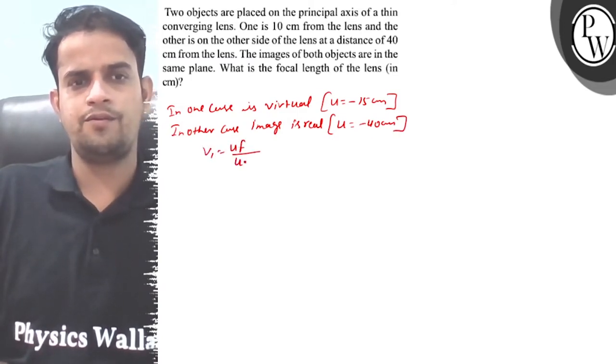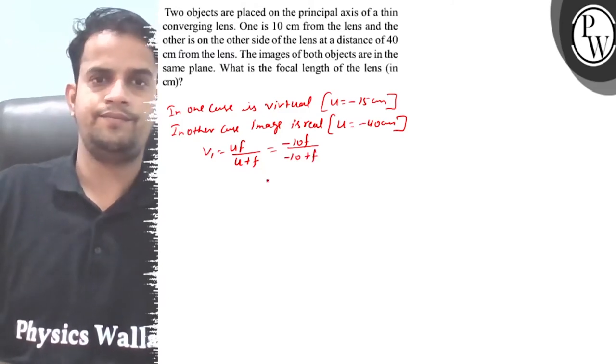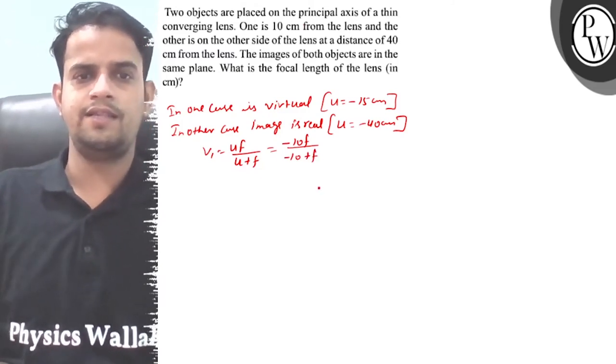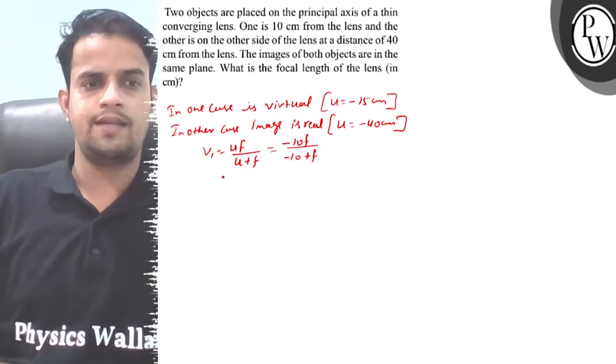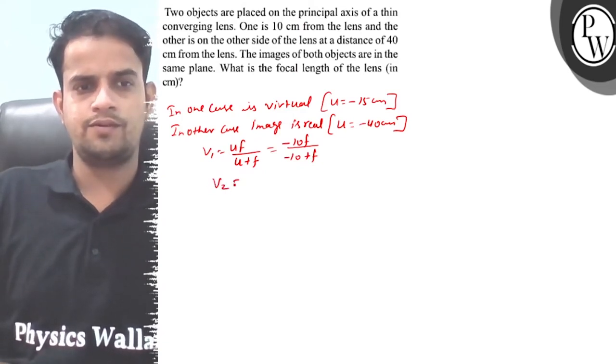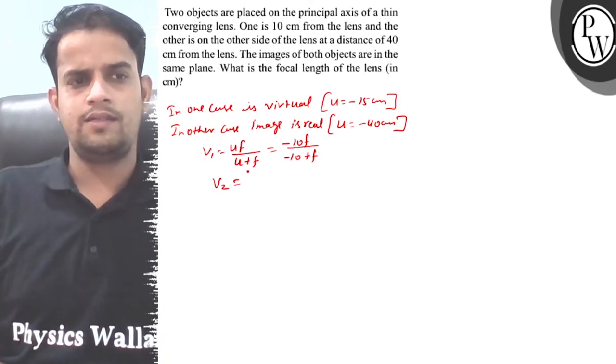We have 1 upon v plus 1 upon f equals to 1 upon u. So v equals to minus 10f divided by minus 10 plus f. When u equals to minus 10 centimeter, v equals to this value.